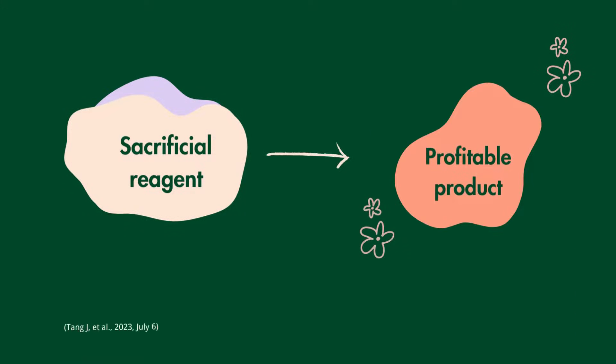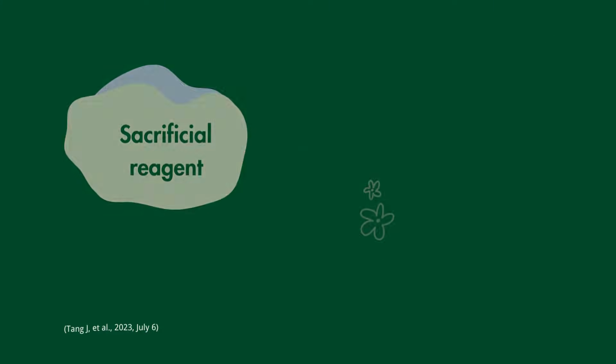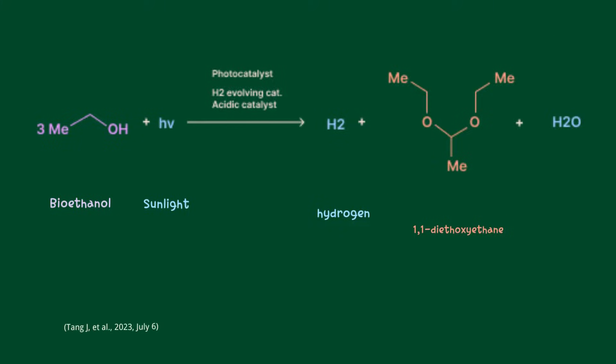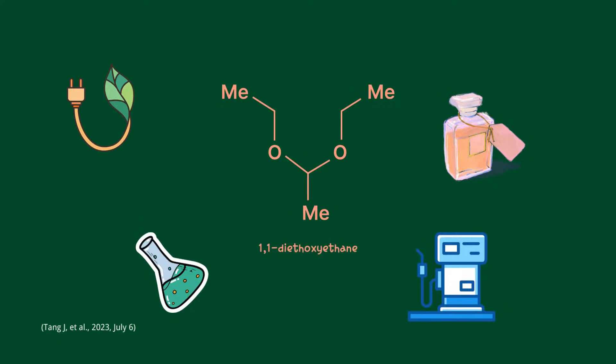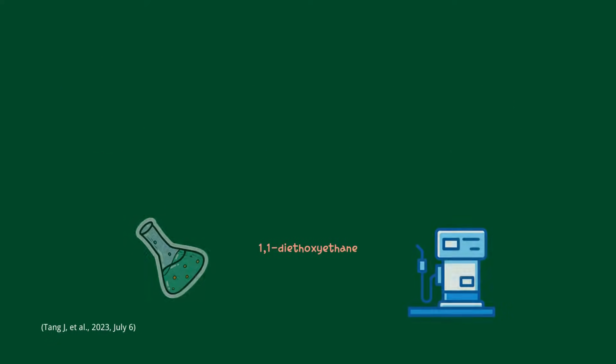By carefully selecting the sacrificial agent and controlling reaction conditions, the agent can be oxidized to a useful product. Based on this concept, Professor Tang suggested coupling with photo-reforming of bioethanol, which produces 1,1-dimethoxyethane. The green 1,1-dimethoxyethane produced can be sold as fragrance, solvent, and additive to diesel.